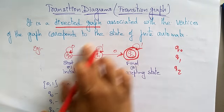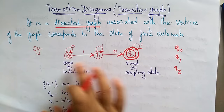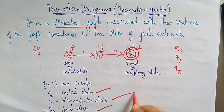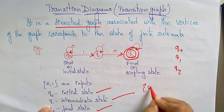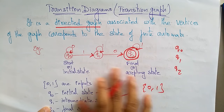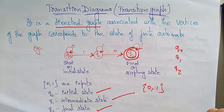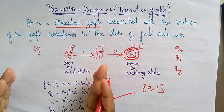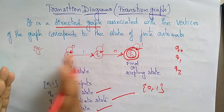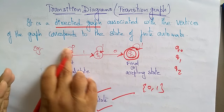Whatever states exist between the initial and the final state are called intermediate states. Here there are two inputs: 0 and 1. So we have an initial state, a final state, intermediate states, and the diagram is represented as a directed graph holding the inputs.